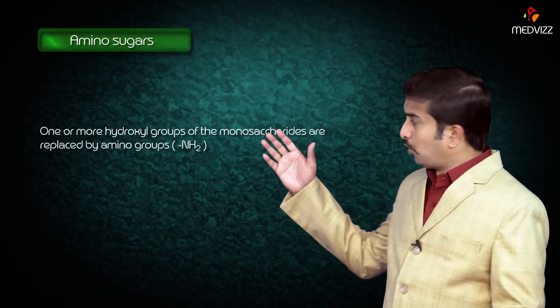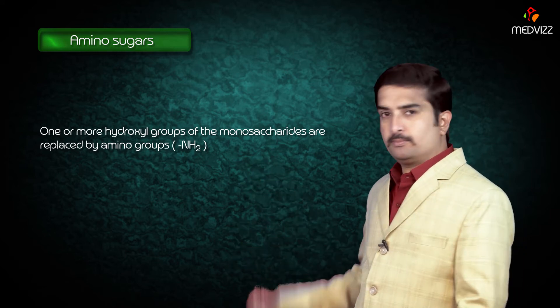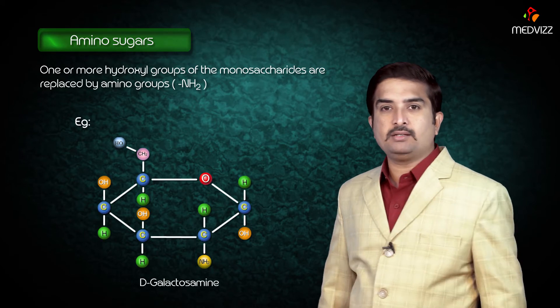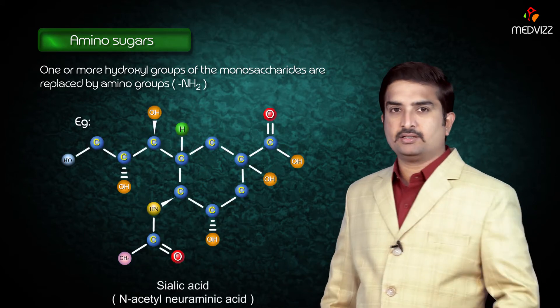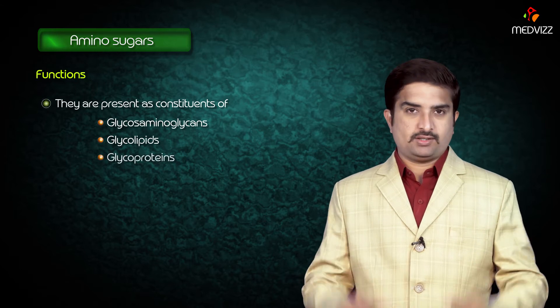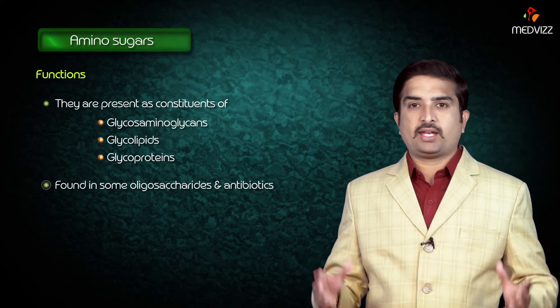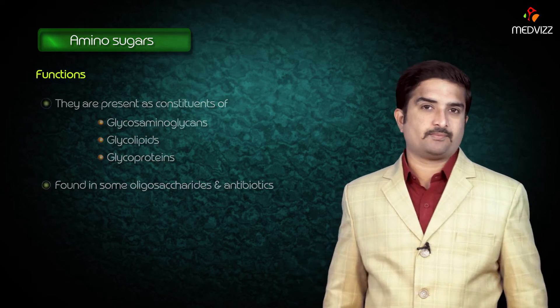The topic of this module is the metabolism of amino sugars. When one or more hydroxyl groups of a monosaccharide are replaced by amino groups, amino sugars are formed — D-glucosamine, D-galactosamine, mannosamine, and sialic acid. These four are called amino sugars and are present as constituents of glycosaminoglycans, glycolipids, glycoproteins, oligosaccharides, and antibiotics.